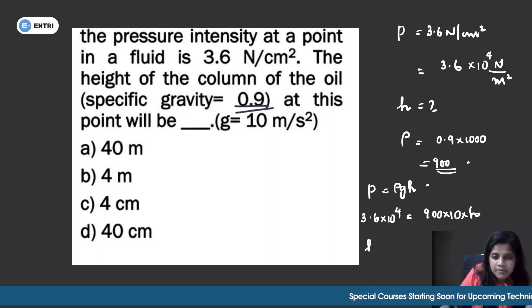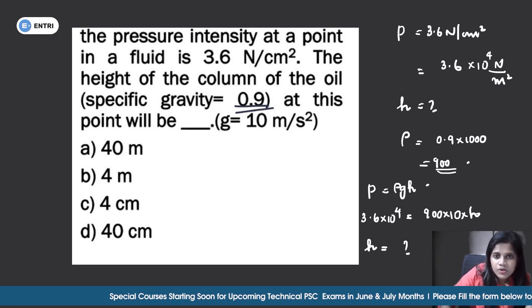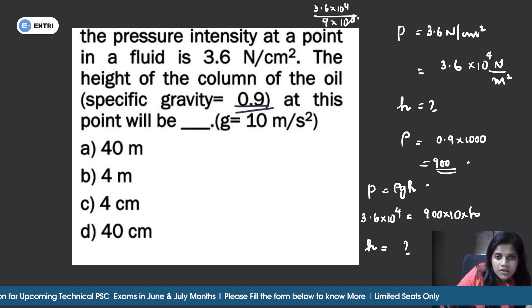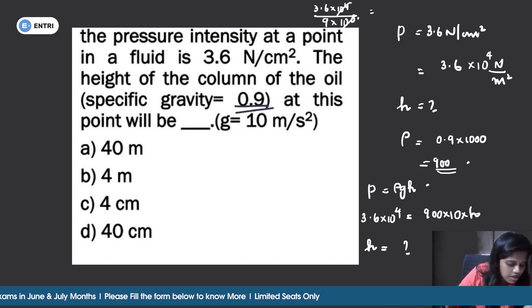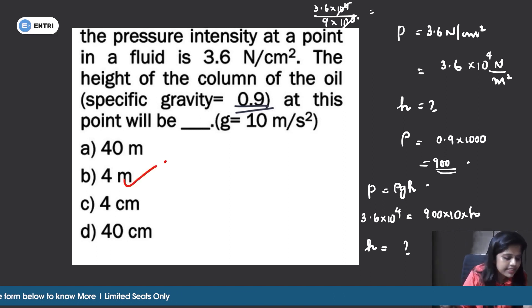Solving for h: h = 3.6×10⁴ divided by 9×10³, which gives 3.6/9 = 4 meters. The correct answer is option B, 4 meters. This is solved using the simple pressure equation p = ρgh.